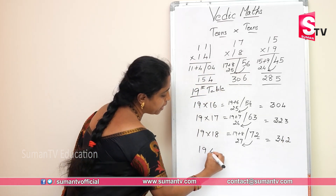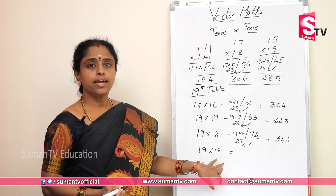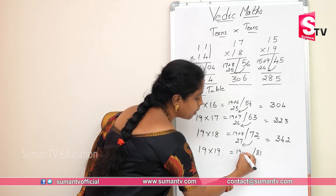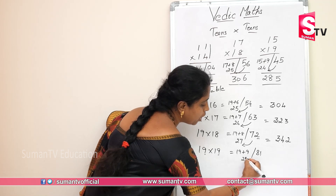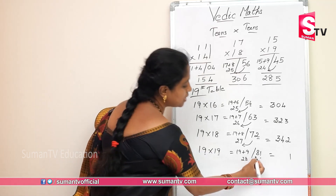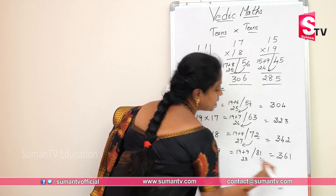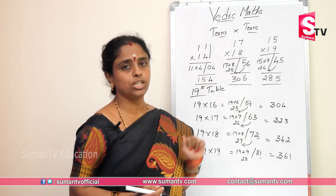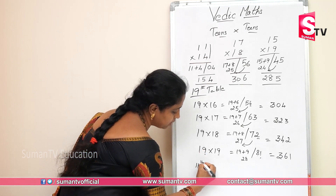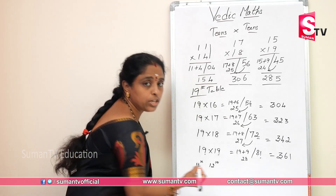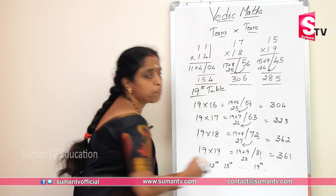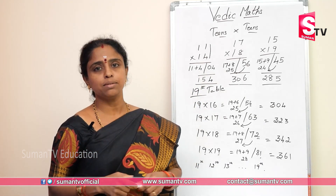19 into 19. 9 nines are 81. 19 plus 9 is 28. Write this 1 over here, 8 plus 28 — what is 8 plus 28? You will be getting 36. So 19 into 19 is 361. Now you can practice the 11th through 19th tables — teens into teens — by yourself. It will be easier; practice makes perfect.